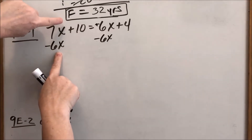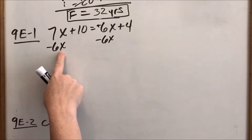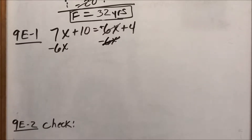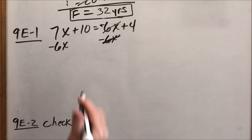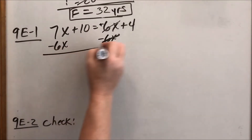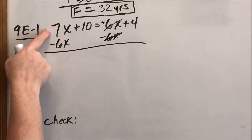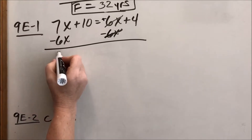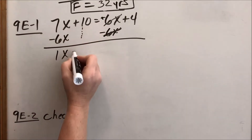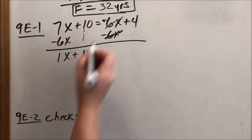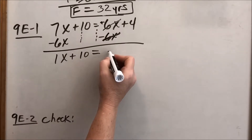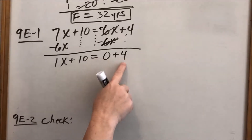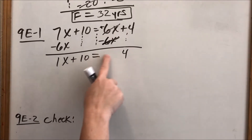Whatever I do to this side, I do to the other side of the equal sign. I write it under my X's, so I add X's to X's. A positive 6X and a negative 6X cancel and equal zero — like having 6 cookies and subtracting 6 cookies leaves zero. Now I add the remaining X's: 7X minus 6X is like 7 cookies minus 6 cookies — one cookie, or 1X. I didn't do anything to that 10, so I keep it. Zero plus four is just four, so I don't have to write that zero.